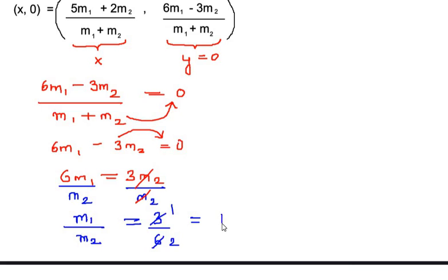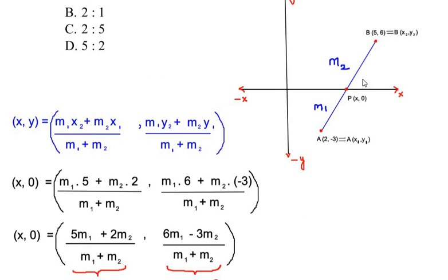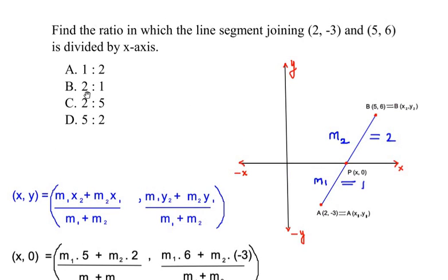So writing it as a ratio we write 1/2 as a fraction and in the form of ratio it is 1 is to 2. So this is the ratio we were looking for in which the line AB is being cut. So m₁ is equal to 1 and m₂ is equal to 2. So m₁, that is AP, is a smaller part and BP is a bigger part. So the answer here is option A, that is 1 is to 2.